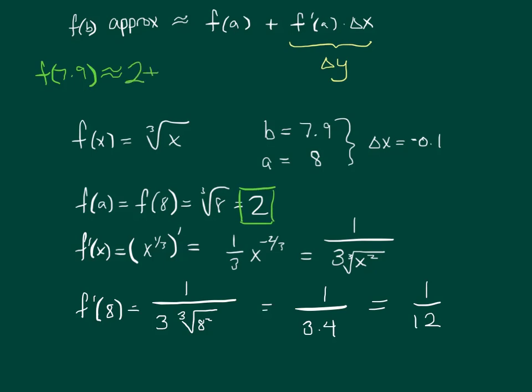Plus f prime of a, which is 1 twelfth times delta x, which is negative 0.1.